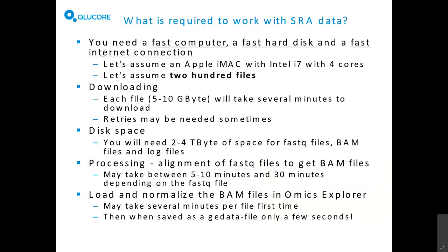For example, assume you have an Apple iMac with an Intel i7 processor with four cores, and around 200 FASTQ sequence files. First you need to download the files, which will take several minutes, and there are tools I will go through for that. Sometimes you need to retry a number of times due to hiccups. For disk space, with files around 10 gigabytes each, you will need roughly two to four terabytes of space for FASTQ files, BAM files, and log files in total.